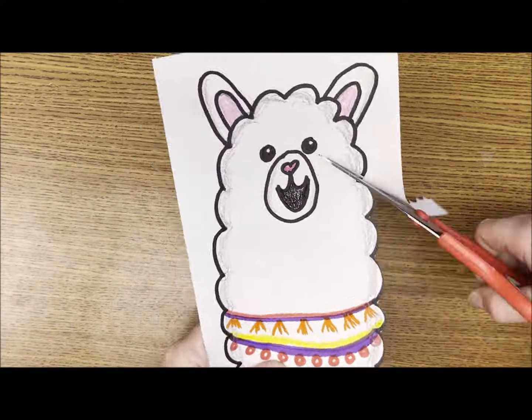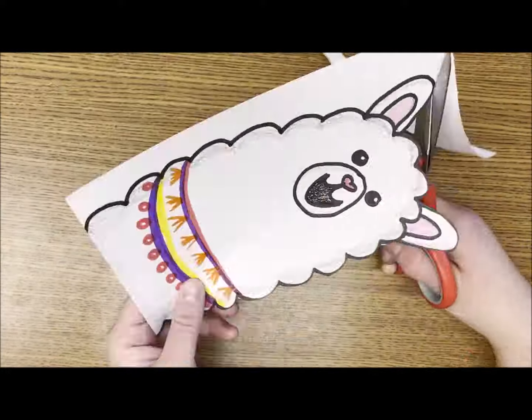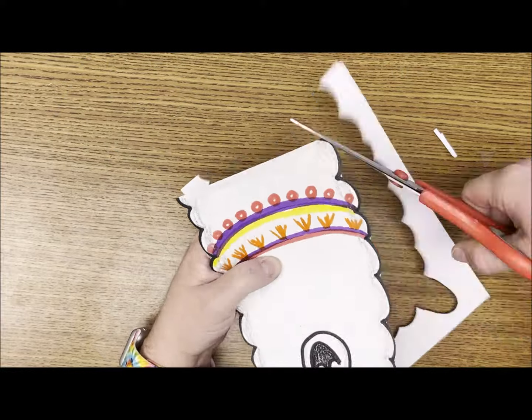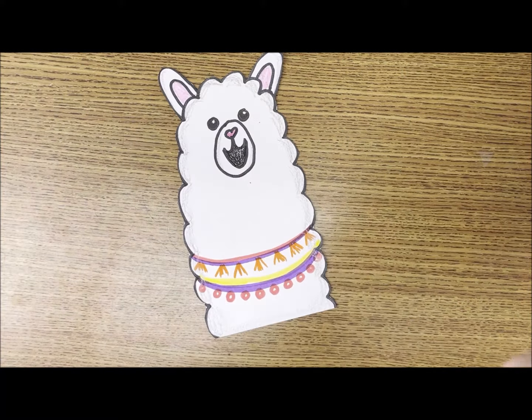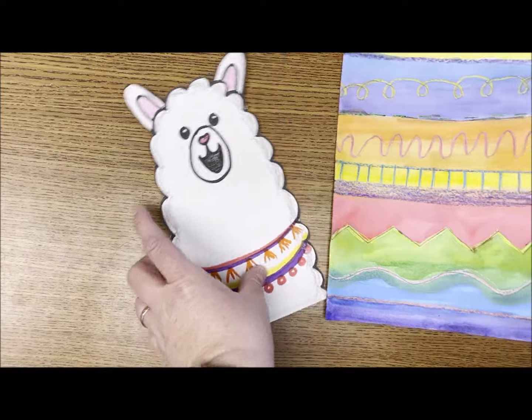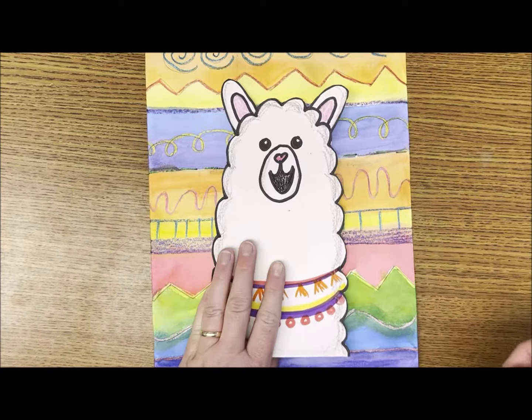Now I'm ready to cut. Cutting very carefully around the outside edge of my llama, I'm going to cut out the entire shape. The final step is to glue my llama down to the background with patterns.